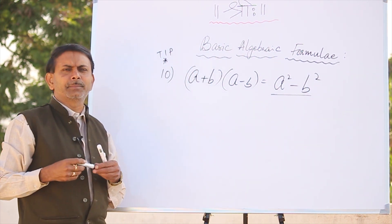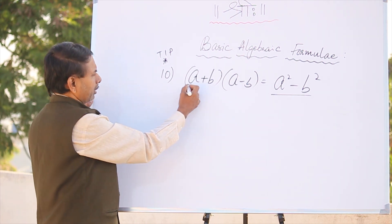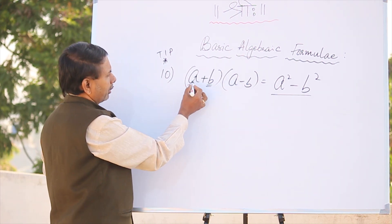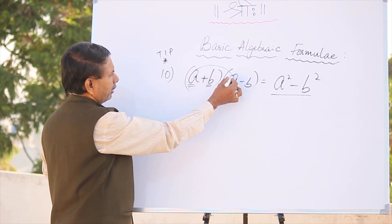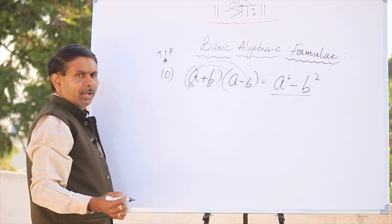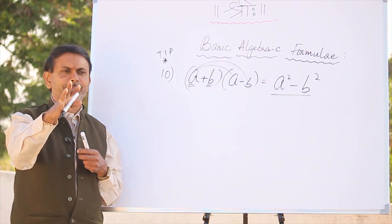How to prove that? Very simple. A is equal to 2. How do you do this? A into a and a minus b — that minus is the answer. It will be minus.